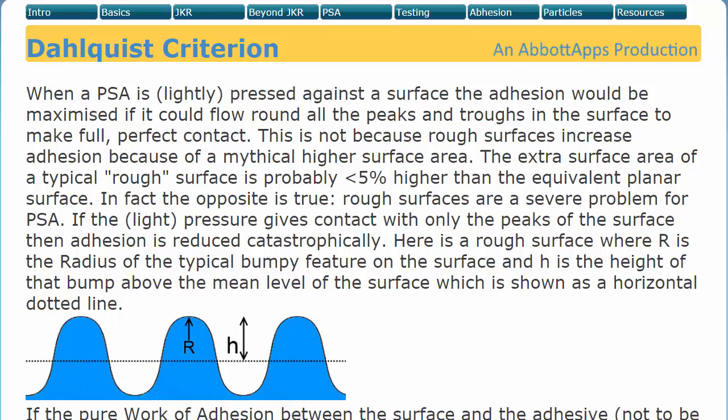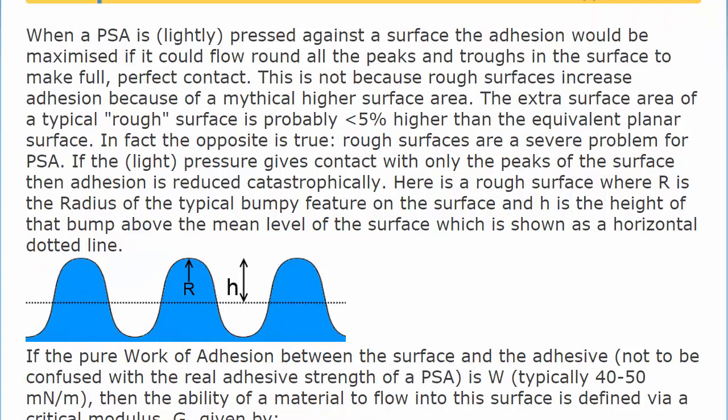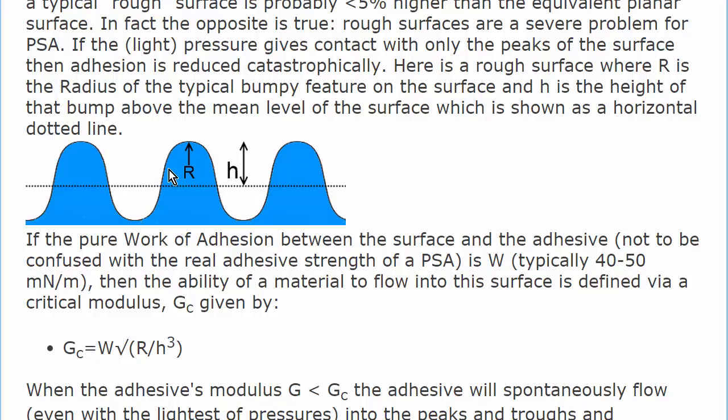The first thing to discuss is the famous Dahlquist criterion. Now, we have a rough surface. The surface has a roughness with an average height, h, and each feature has a radius, r. You'll recognize that most rough surfaces don't have a single h height and a nice, convenient radius r, but it turns out that you can always approximate a real surface with a single h and single r. It's good roughness physics.